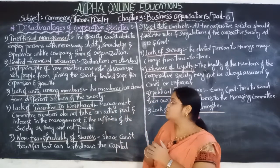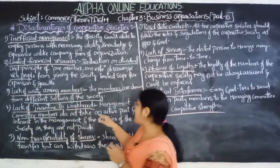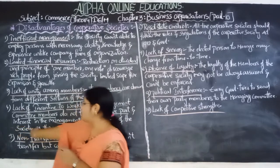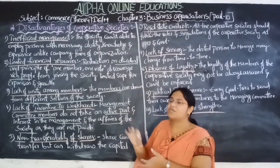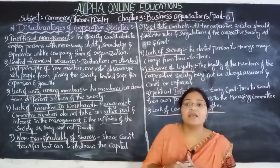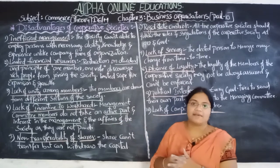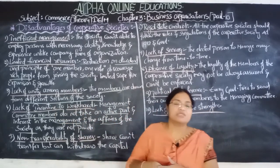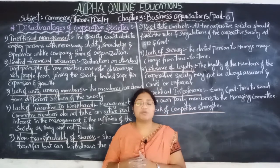The next disadvantage is lack of incentives to work hard. The managing committee members do not take any active part or interest in the management and affairs of the society because they are not paid at all. They are elected through a voting process but are not interested in looking after what is going on in the business, because the society does not pay any kind of incentives or income to them. That is why they are not at all interested in participating in the management activities of the cooperative societies.